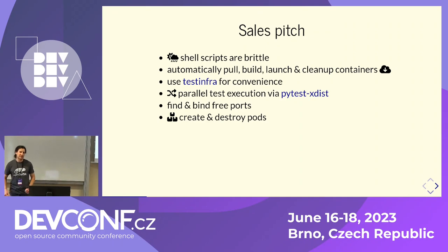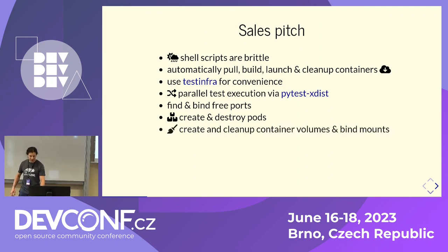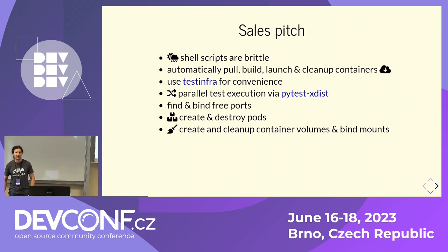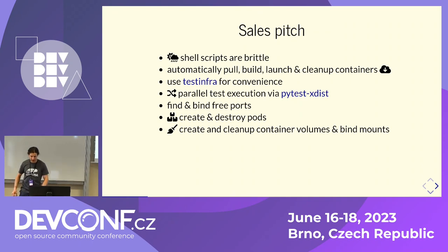If you use Podman as the backend and not Docker, then you can also use pods to create a shared network. You can create and clean up container volumes and bind mounts if you need that. Also, if your container somehow declares a volume and creates anonymous volumes, they will also get removed afterwards — so you don't suddenly realize your container storage suddenly consumes 10 gigabytes. Where did that come from?